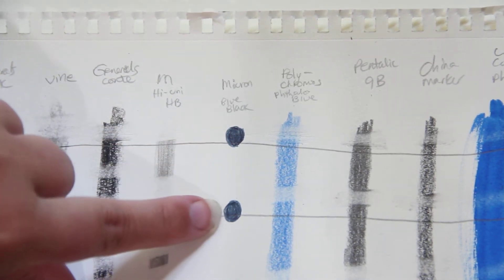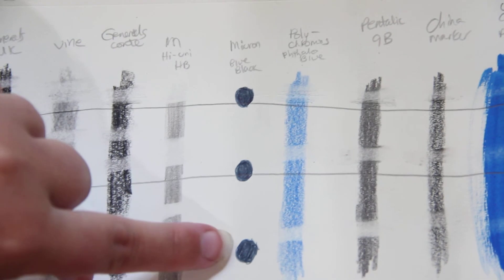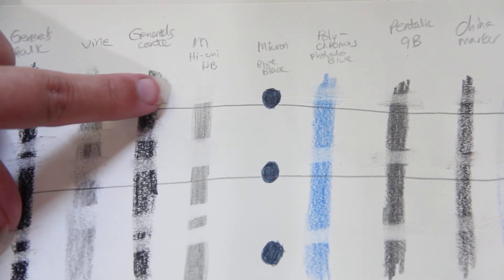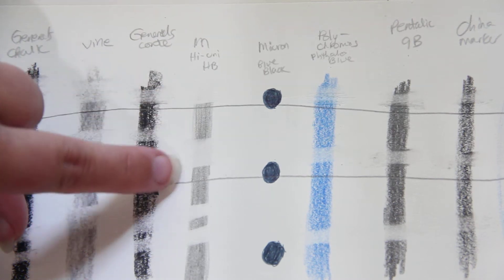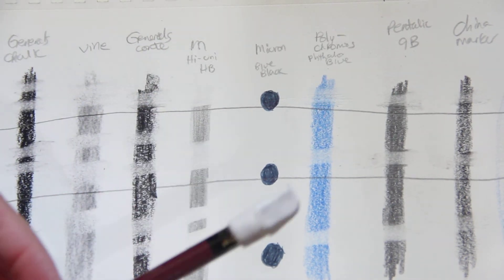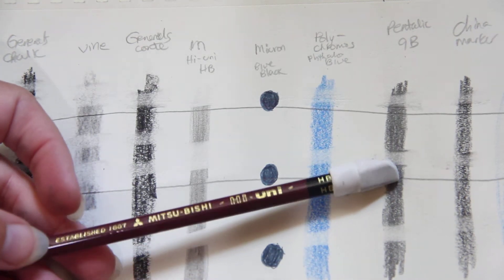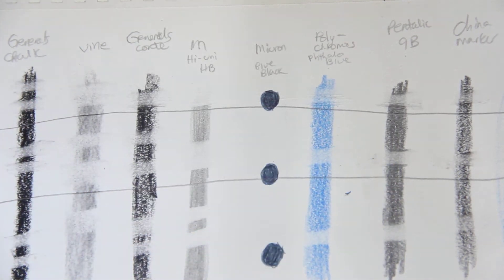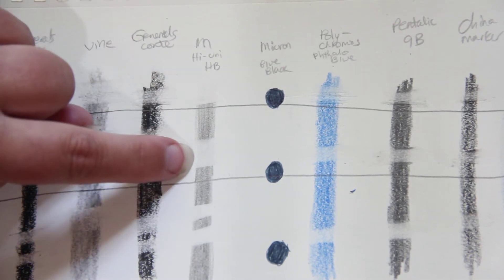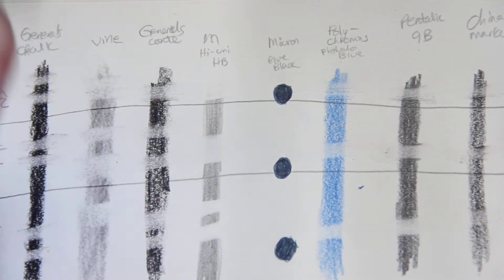The micron ink is really tough to see. They barely did anything. The HB, which is just a standard pencil, but I have this really nice Mitsubishi high uni. It's a really smooth pencil. There's still a little bit left, and the cap eraser did the best.